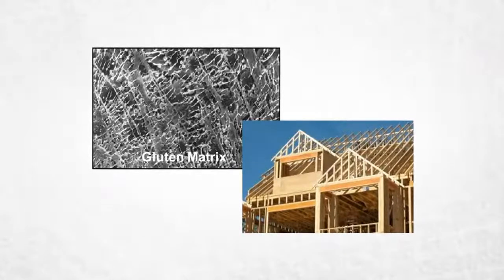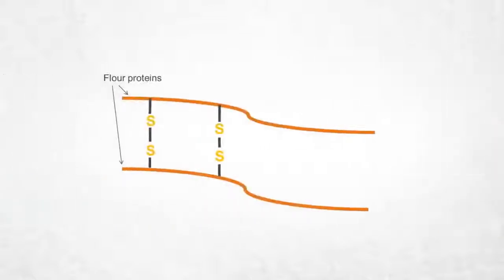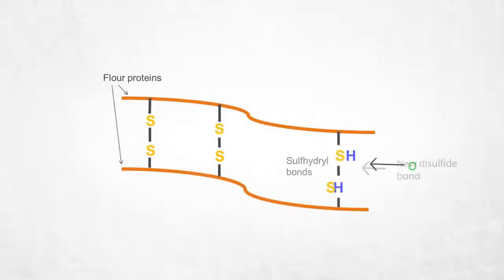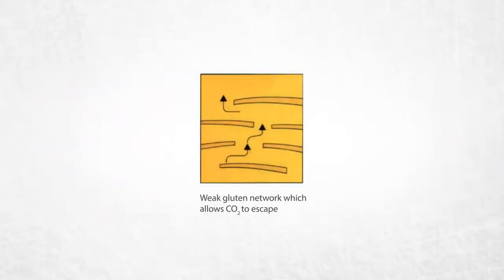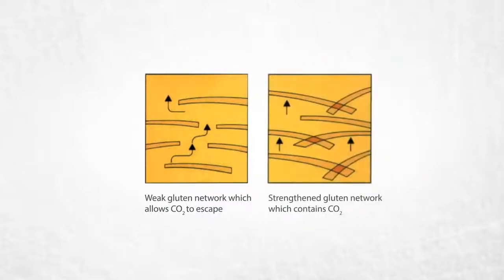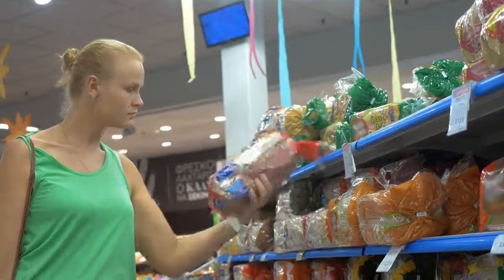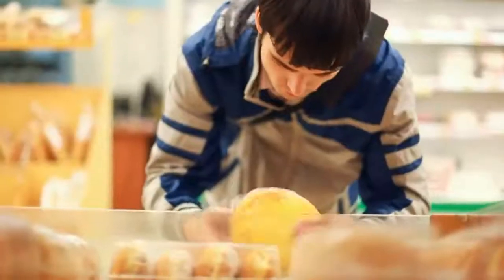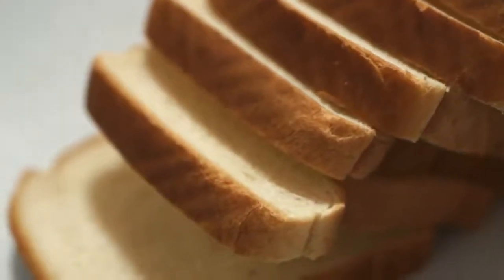The gluten matrix is the structural support of the dough system. The role of oxidation agents such as ascorbic acid is to strengthen the gluten matrix. Strengthening emulsifiers such as SSL and Datem can also be used to strengthen the gluten matrix. But today's consumers are growing more educated and expect simpler ingredient lists, so bakers turn to enzymes to optimize their gluten network development.